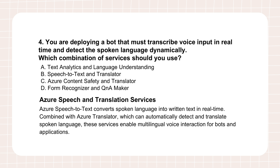Scenario four: a bot that handles spoken language in real time needs to automatically figure out what language the person is speaking dynamically — real-time transcription and language detection. The key combination here is the speech-to-text service and the translator service. Speech-to-text takes the audio input and transcribes it into text in real time. Translator adds the magic layer: it can automatically detect the language being spoken in that audio stream, often as it's being transcribed, and if needed translate the text. So your bot can understand someone speaking English, then someone else speaking Spanish, without needing to know the language beforehand. Think call centers, global applications.